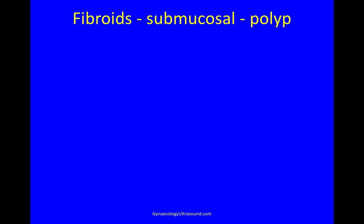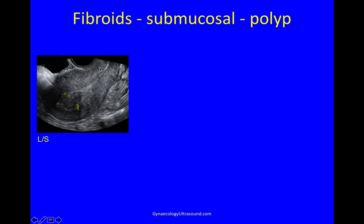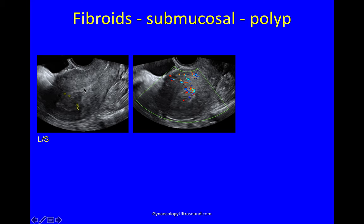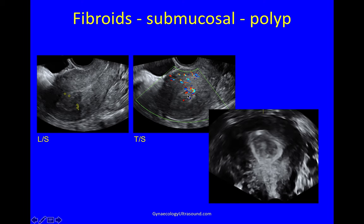A fibroid can jut further into the cavity — in this anteverted uterus this hypoechoic regular mass seems to be surrounded by endometrium in all directions. Going transversely you can see endometrium all the way around and a feeder vessel — so this is a fibroid polyp. On 3D it shows up really nicely because it's hypoechoic and the endometrium surrounding it is hyperechoic. This is a fibroid polyp, submucosal G0.